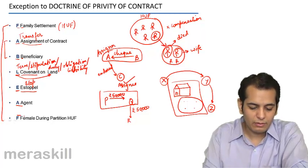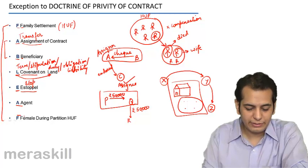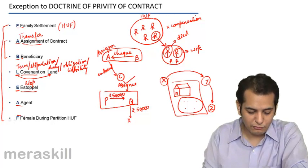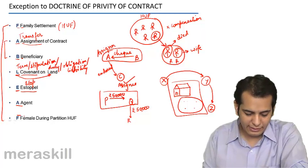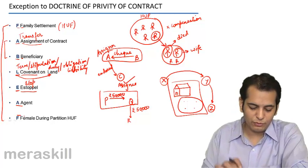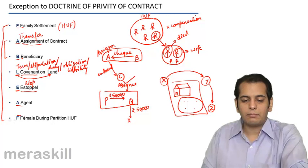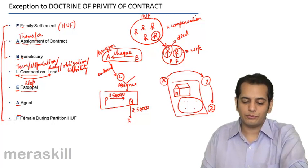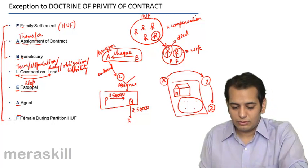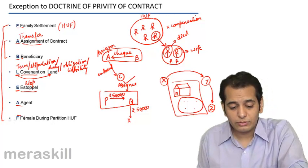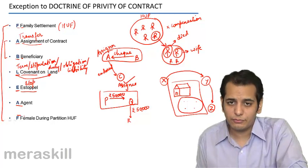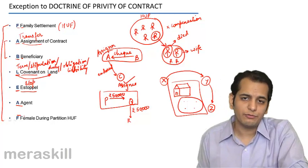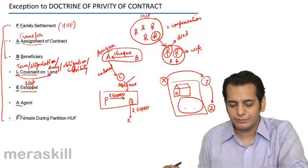B is for beneficiary, L is for covenant on land, E is for estoppel, the second A is for agent, and finally the second F is for female during partition of HUF. With this, we complete this topic on exceptions to the doctrine of privity of contract. Let's move ahead.